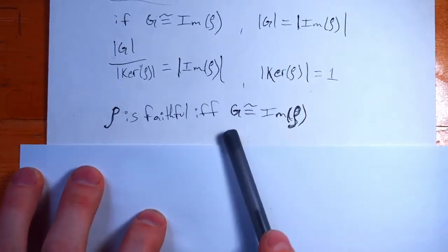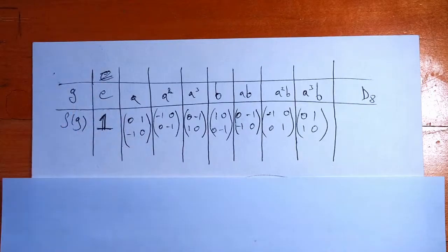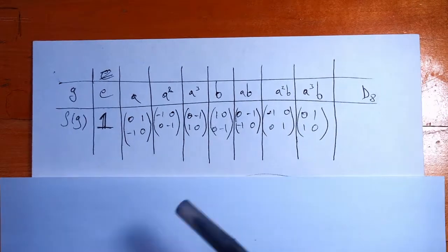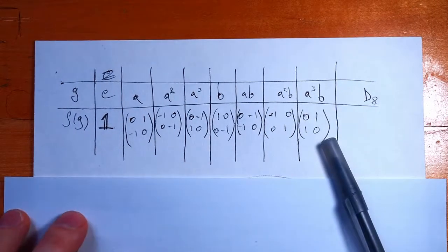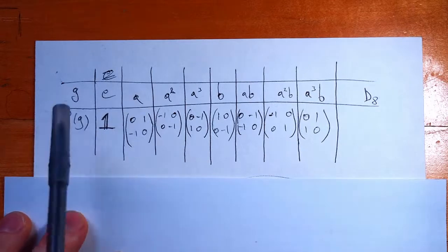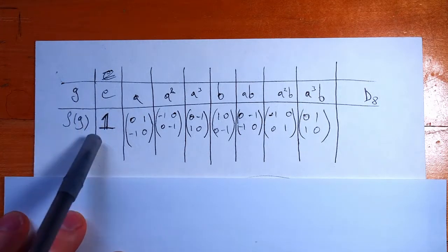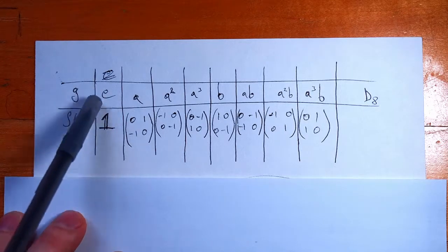And to bring back an example from before, we had this representation of d8, the symmetries of a square. And if you look at it, you'll see that the only element that gets mapped to the identity by our homomorphism, right, our representation, is the identity. So this is an example of a faithful representation.